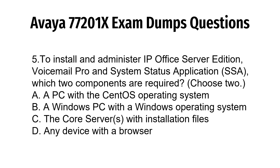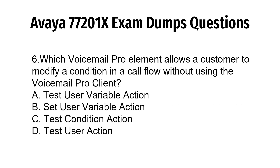Question 5. To install and administer IP Office Server Edition Voicemail Pro and System Status Application, which two components are required? A. A PC with the CentOS operating system. B. A Windows PC with a Windows operating system. C. The core servers with installation files. D. Any device with a browser.